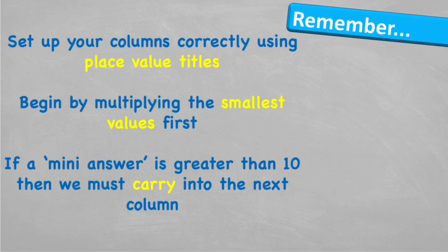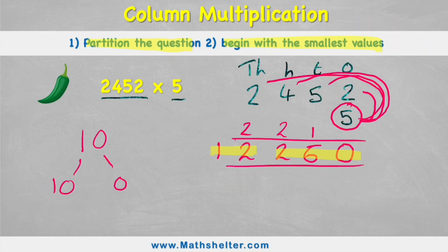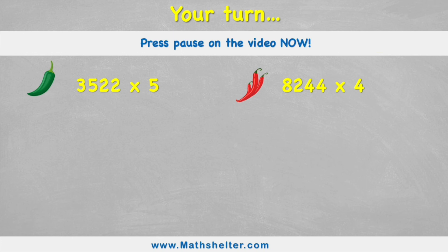Super efficient, easy method. Let's look at what to remember: set up your columns correctly using the place value titles — this will help you make fewer mistakes. Begin by multiplying the smallest values first. And if a mini answer is greater than 10, we must carry into the next column, just like we did here with these numbers. Your turn — have a go at answering these red and green chili challenges and see how you get on. Press pause on the video now. Good luck.